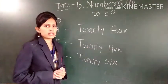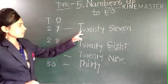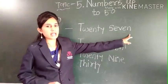1 to 10 spelling. 27. T-W-E-N-T-Y, 7, S-E-V-E-N, 7.